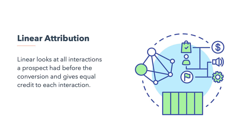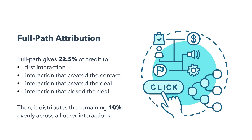Here are the multi-touch attribution models you're most likely to encounter. Linear attribution looks at all interactions a prospect had before the conversion and gives equal credit to each interaction. Linear attribution is great if your prospects are often in the consideration phase for an extended period of time, because it highlights the impact of all your content and messaging during that time.